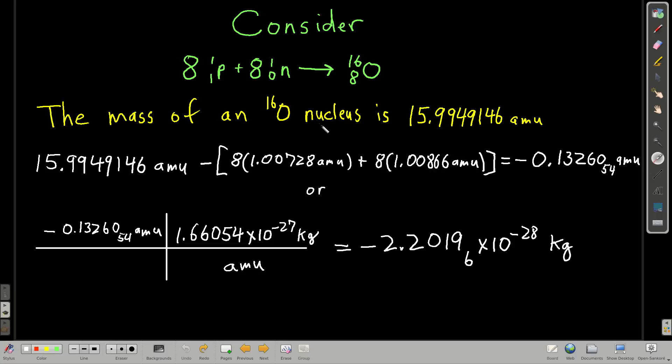Now, if we look at the difference between the mass of that nucleus and the sum of the masses of the protons and the neutrons, this is the mass of a proton in AMUs, and this is the mass of a neutron in AMUs. So we take eight protons plus eight neutrons, add them up, subtract them from how much the oxygen 16 weighs, we have a difference of negative 0.13261 AMUs. In other words, there's less mass here than there is when we combine eight protons and eight neutrons.